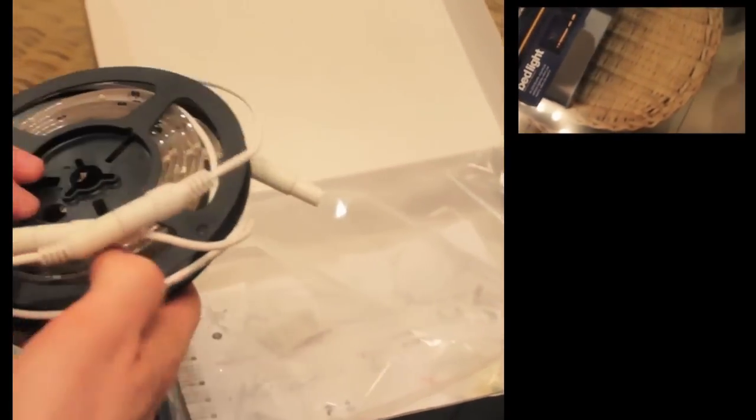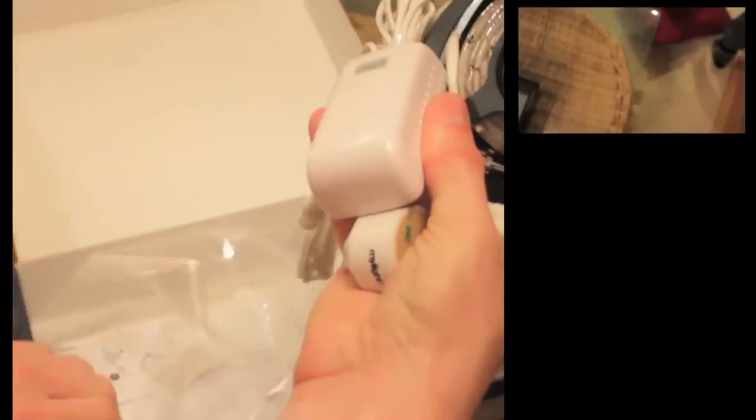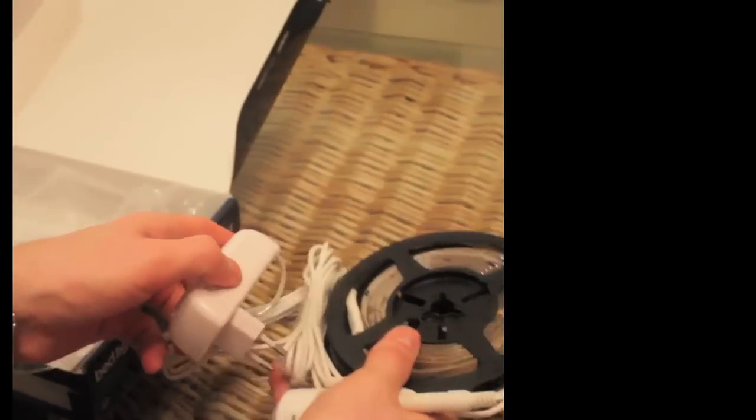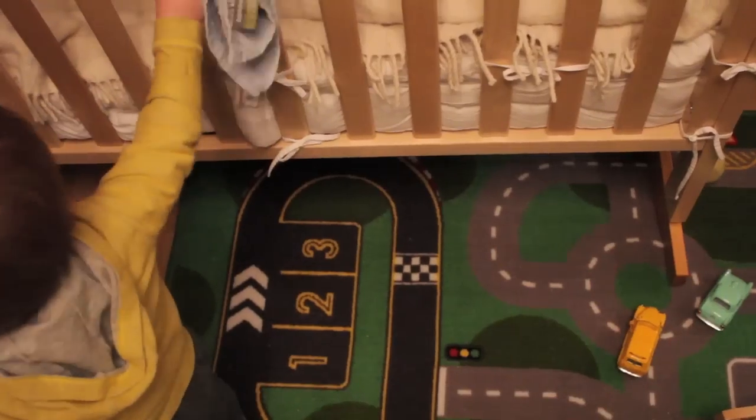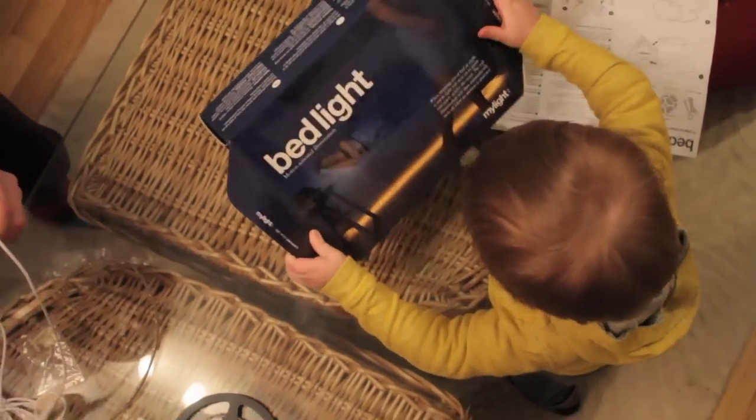What we also found was a MyLight installation video on Vimeo. First of all, we should clean the surface where we want to install and check if the box is empty.